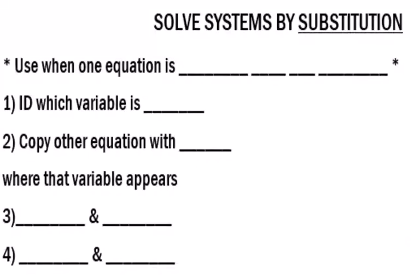So we've looked at solving by graphing. The next thing that we're going to look at is solving systems by substitution. Part of why we have different ways to solve is because sometimes they're more convenient than the others.